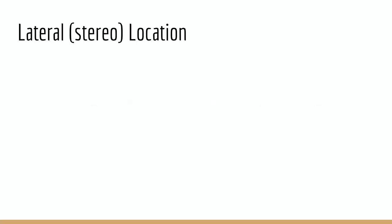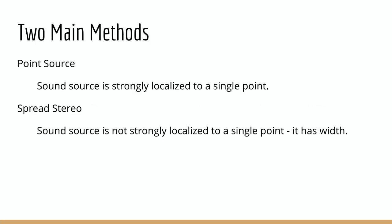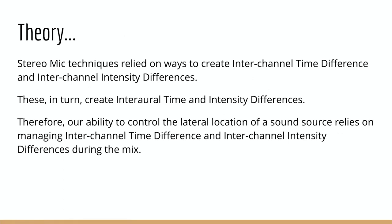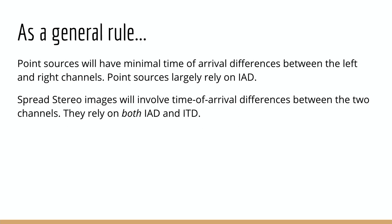We talked about soundstage drawings and the idea of lateral stereo location. We know from our critical listening course that sound sources can be a point source — effectively very narrow on our soundstage — or they can be a spread stereo image with some stereo width, occupying a portion of that lateral left-to-right stereo field. We also talked about stereo microphone technique and how we can use those techniques to create interchannel time differences or interchannel level differences or both. Generally, interchannel time differences produce a spread stereo image with some width. To get a true point source, we would have to have no interchannel time differences.